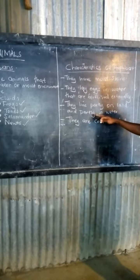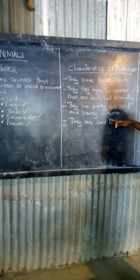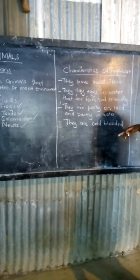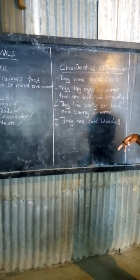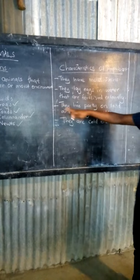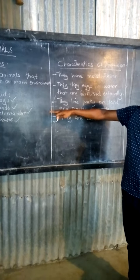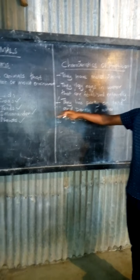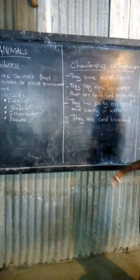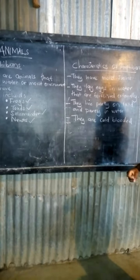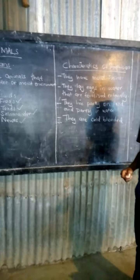The last point is that they are cold-blooded. So these animals are cold-blooded. That is all we have for amphibians.